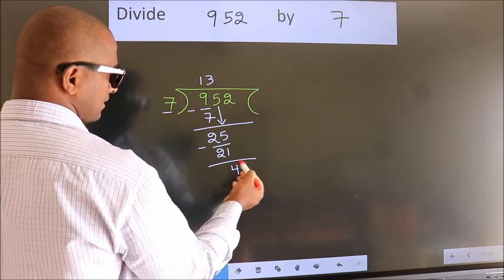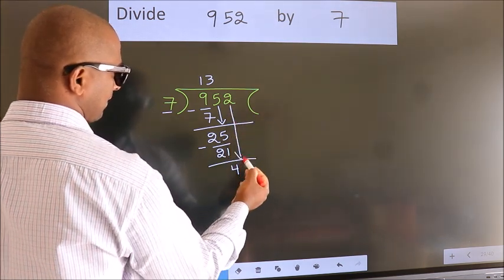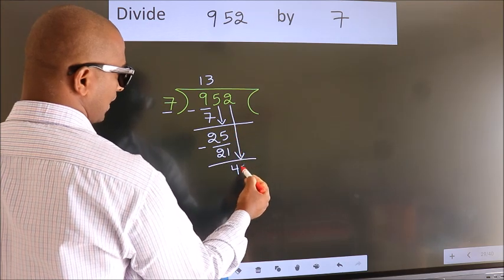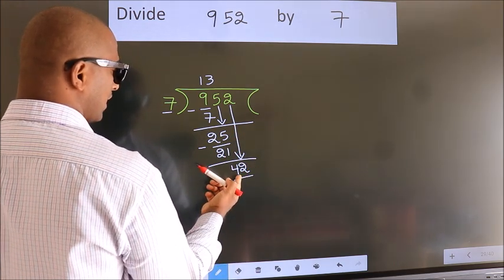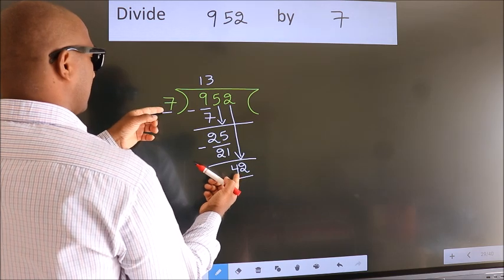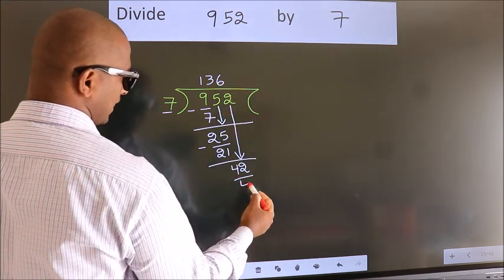After this bring down the beside number. So 2 down. So 42. When do we get 42 in 7 table? 7 times 6 is 42.